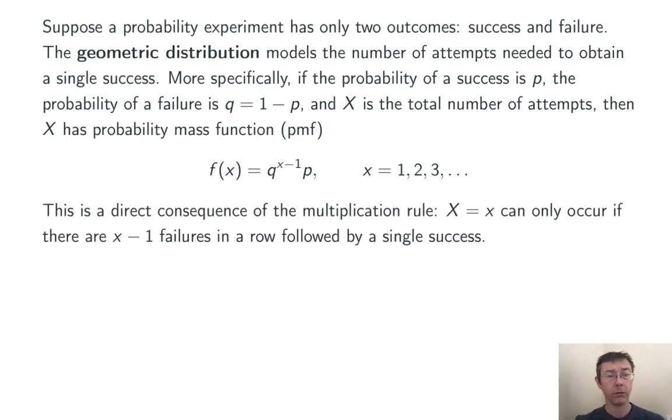This is really just the multiplication rule. In order for the outcome to be X, we need to have X minus 1 failures and 1 success, in that order. So the probability is Q times Q times Q, X minus 1 times, times P. Notice, by the way, that the probability of success is the same on every trial. These are really Bernoulli trials.